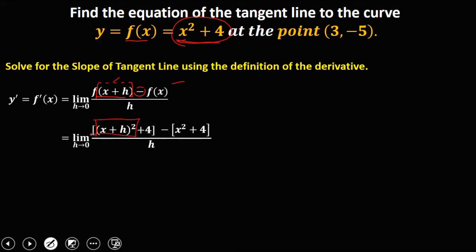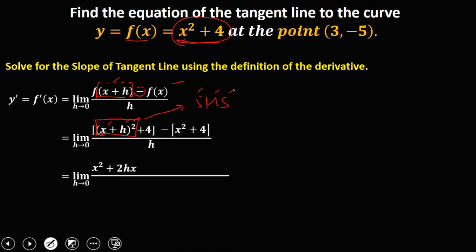From this square of a binomial, we can solve this using SMS: S — the square of the first term, that's x squared; M — multiplication, so multiply 2 times h times x, that's 2hx; S — the square of the second term, that's h squared. Then plus 4. Then this negative distributes to every term: negative x squared, negative 4, over h.